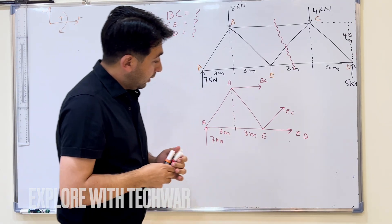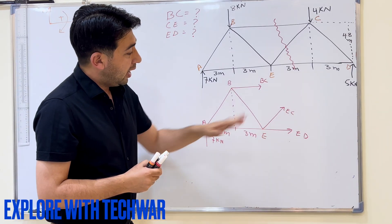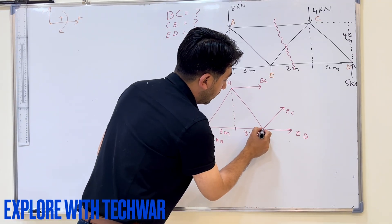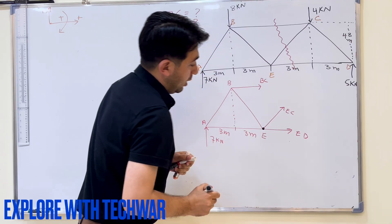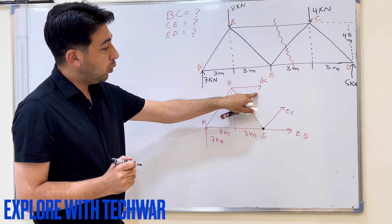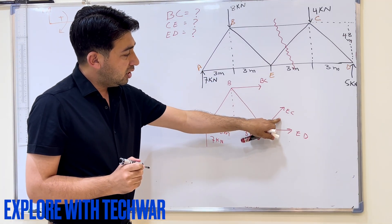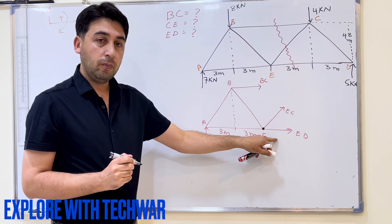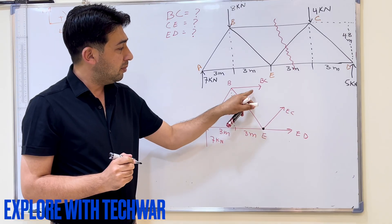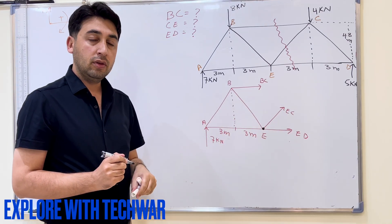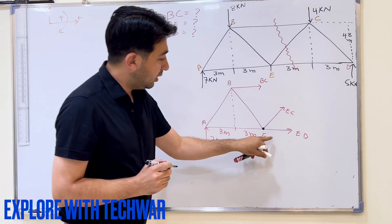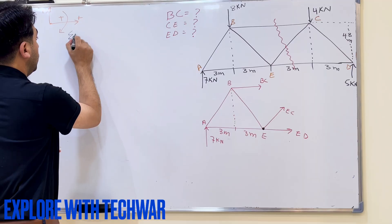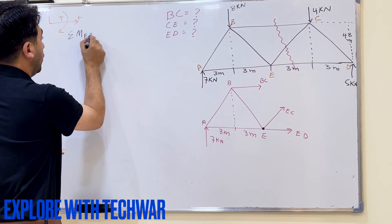What I can do is take the moment about point E. Since EC and ED both pass through point E, they produce zero moment there. So in the moment equation about E, there will be only one unknown — BC — and I can easily find it. Let me write the equation: sum of moments about point E equals zero.